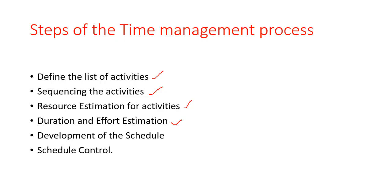The fourth step is duration and effort estimation — determining how much time an activity will take to finish. The fifth step is development of the schedule. To create an accurate schedule, parameters from the previous steps are considered: activity sequence, duration, and the number of resources. If you perform this step manually, you may end up wasting a lot of valuable project planning time, so there are several software packages available for preparing a schedule.